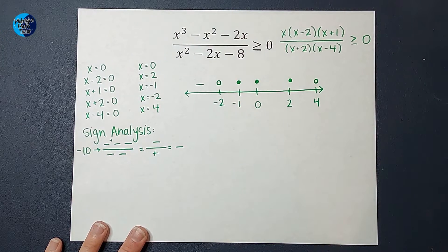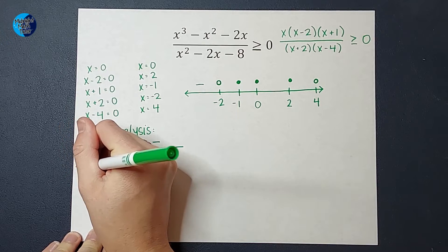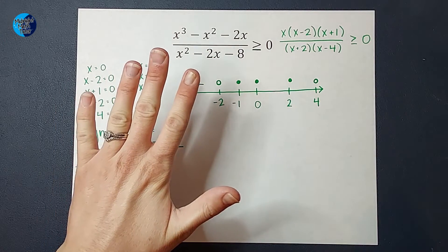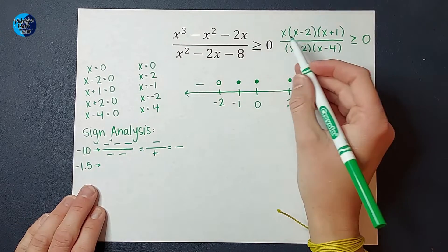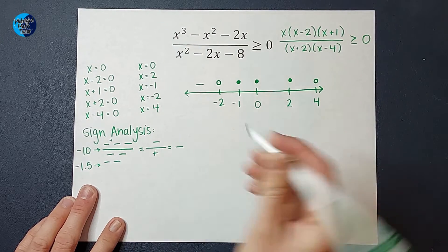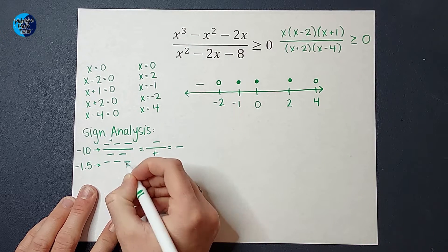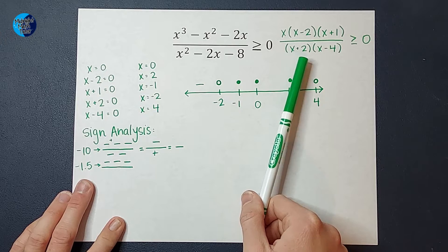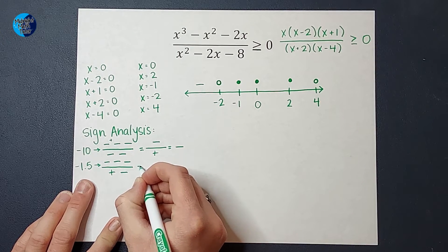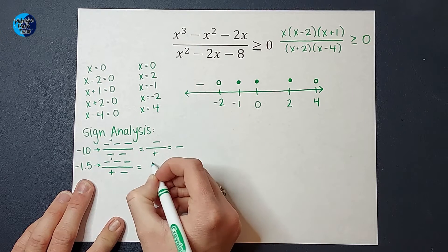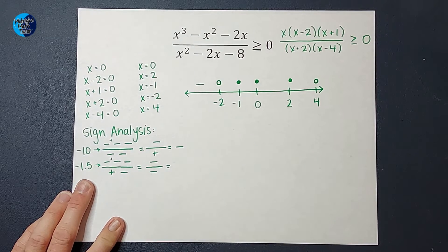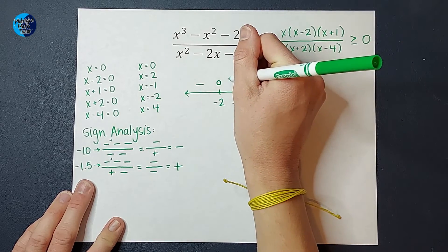We need to pick a number between negative 2 and negative 1 — let's pick negative 1.5. If I plug in negative 1.5 for x, I get a negative. Negative 1.5 minus 2 would be negative. Negative 1.5 plus 1 would also be negative. Negative 1.5 plus 2 would be positive. Negative 1.5 minus 4 would be negative. Negative times negative is positive, times negative is negative. Over positive times negative is negative. Negative divided by negative is positive.